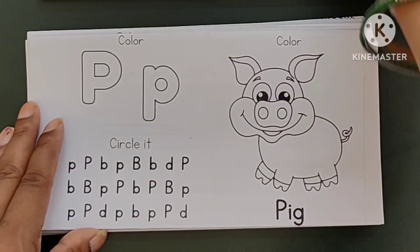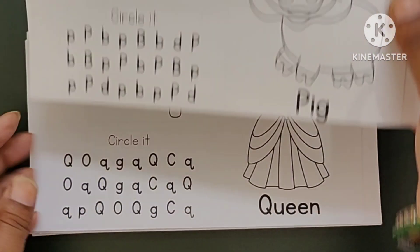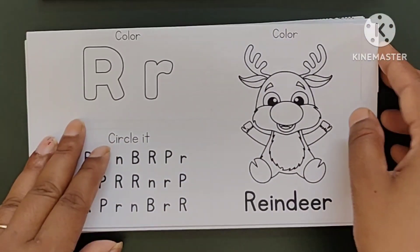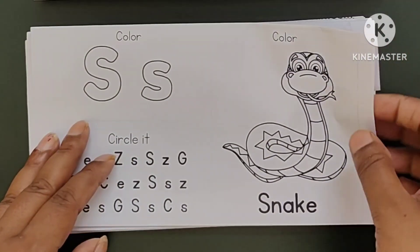O. O for Owl P. P for Pig Q. Q for Queen R. R for Reindeer.